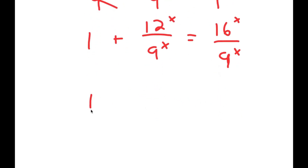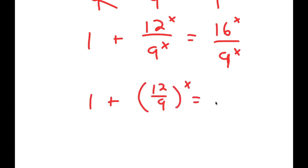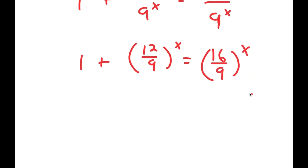Now from here, I can rewrite this as 12 over 9 to the power of x, and 16^x over 9^x I can rewrite as 16 over 9 to the power of x.